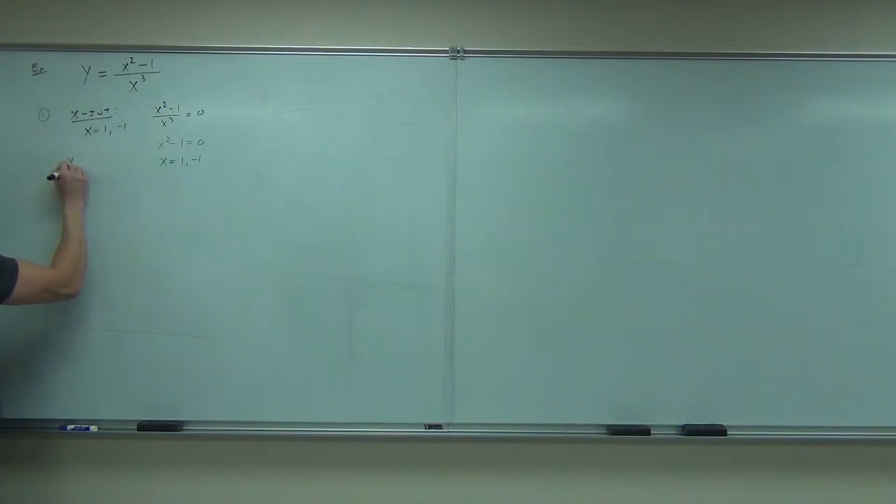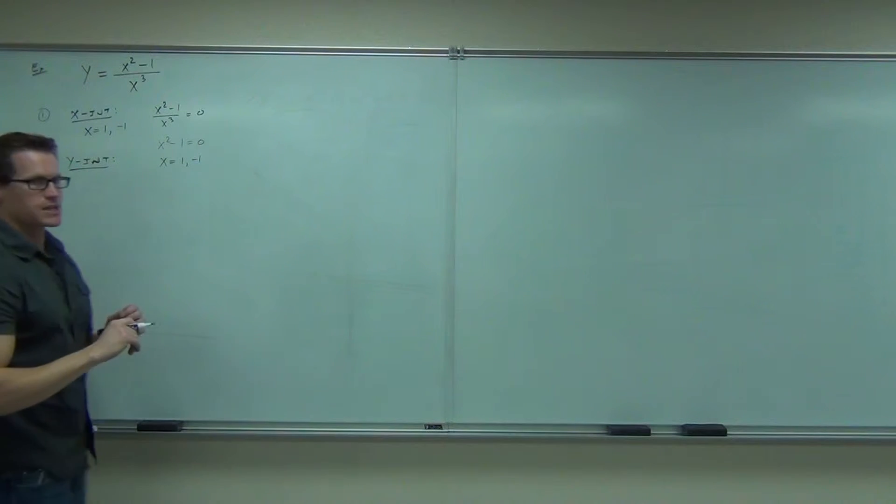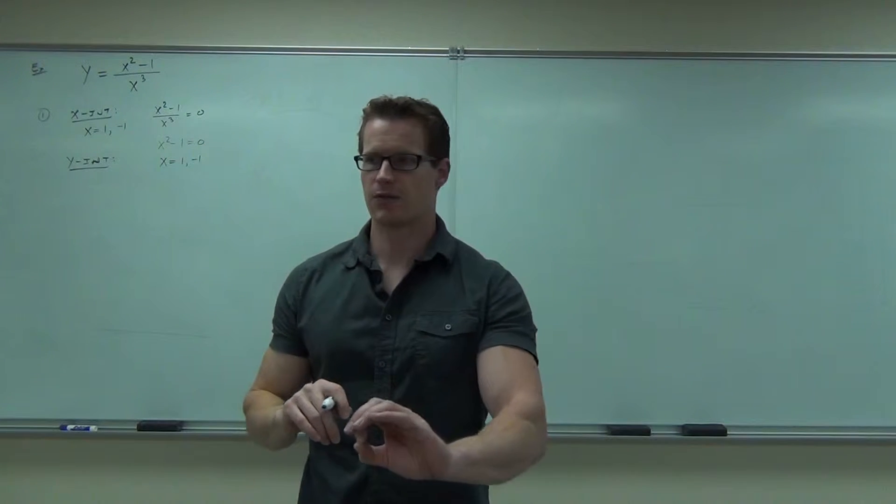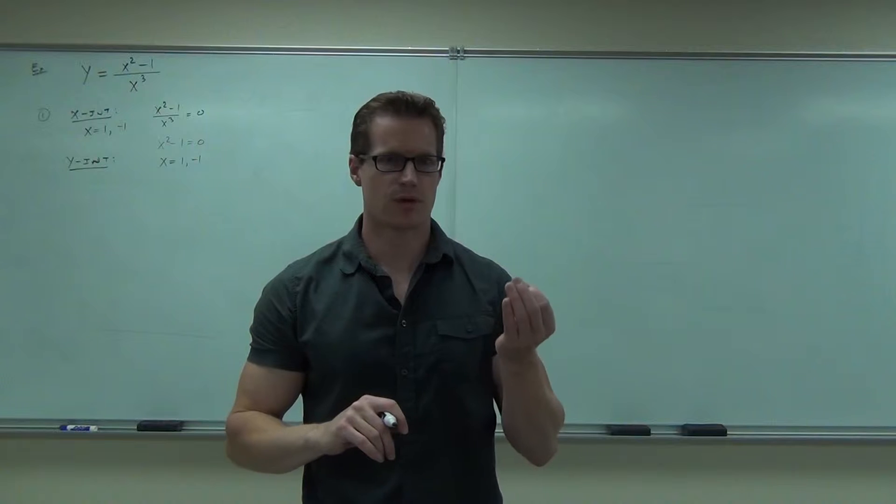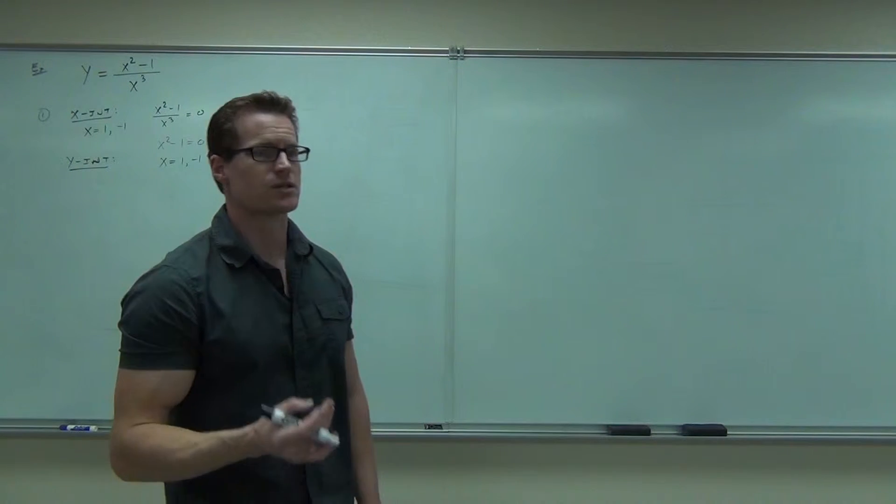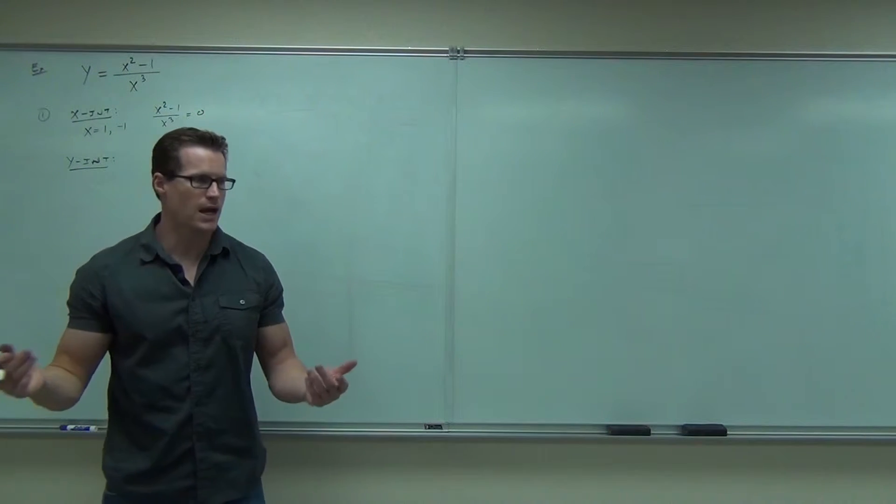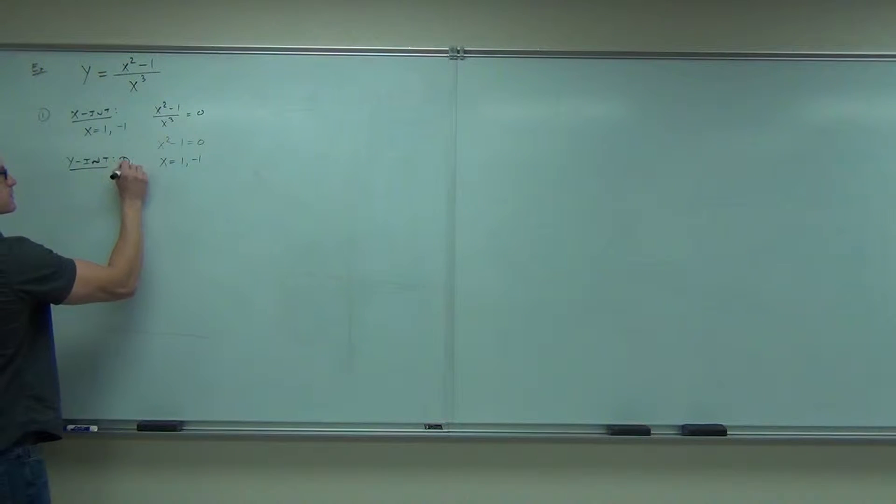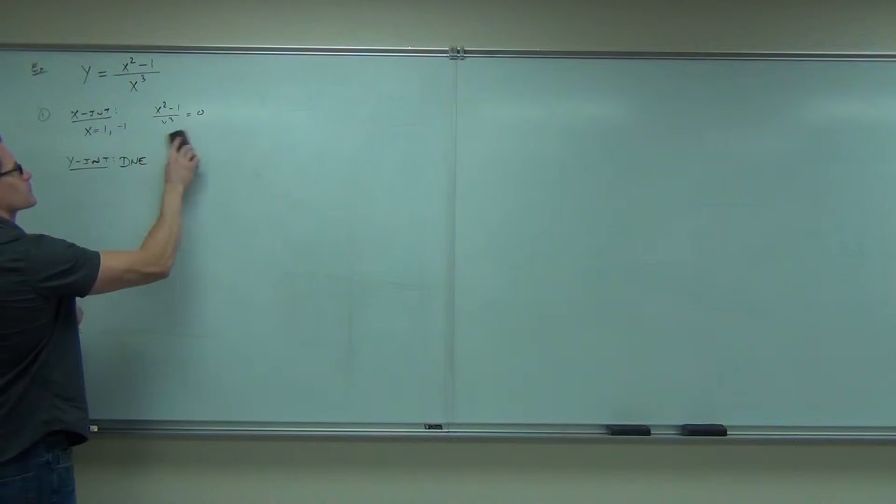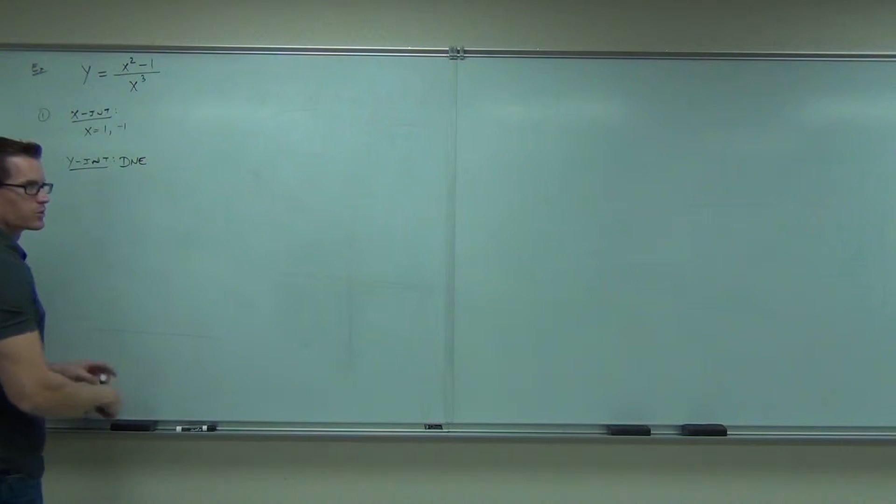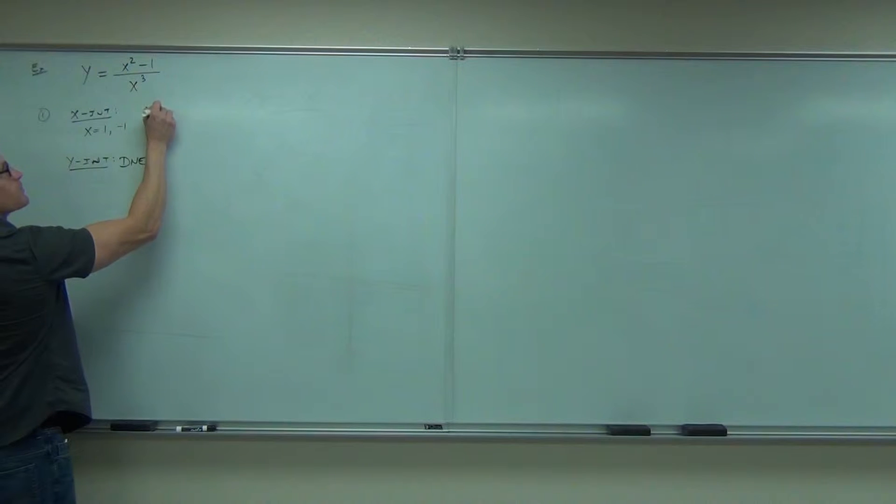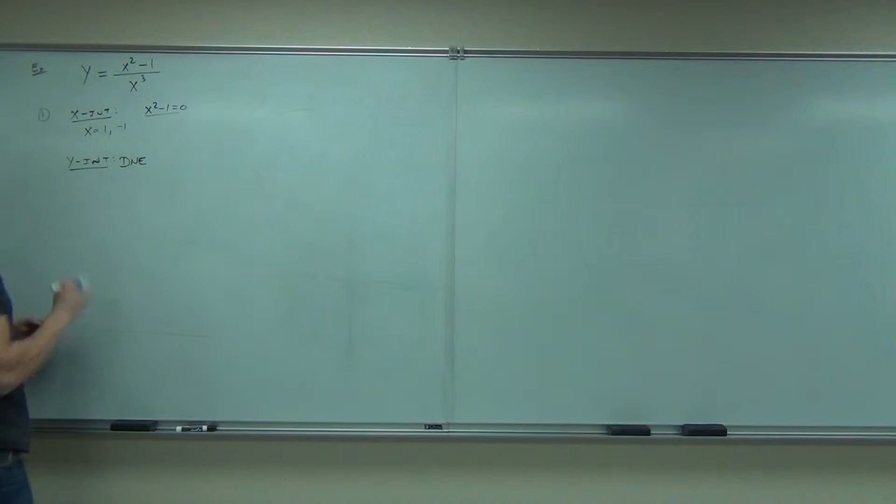Now, y-intercept. Y-intercept says you plug in x equals 0, and you find out an answer. What do you get when you plug in x equals 0? Negative 1 over 0. That's a problem. That means there is no y-intercept. And we're going to find out why in step number 2, but it does not exist. I'm going to erase little parts so we save space. But this is from x squared minus 1 equals 0. That gives the 1 and negative 1.